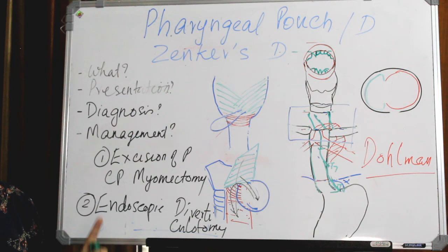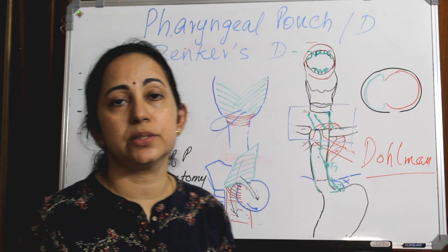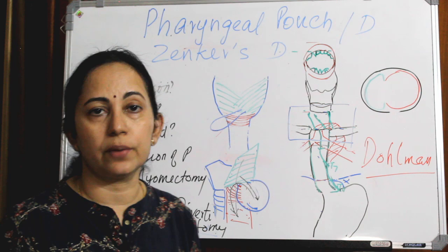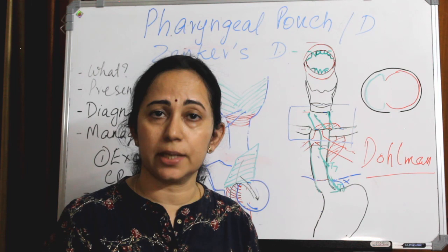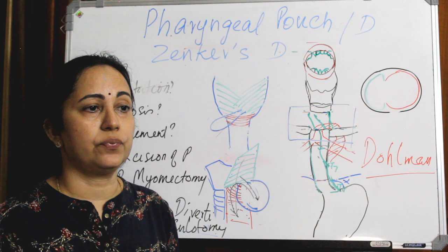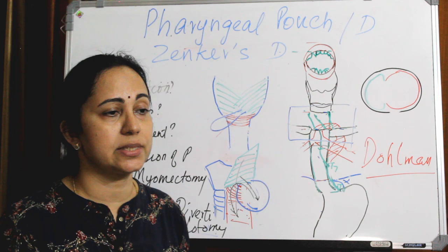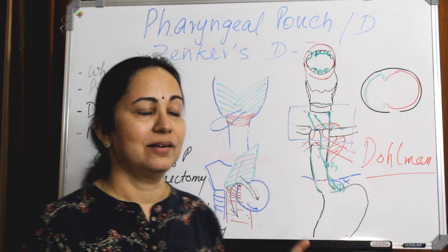Pharyngeal pouch has many MCQs asked from it. It is also called the gateway of tears and is a pulsion diverticulum because of increased intraluminal pressure. It mainly happens in elderly people above 60 years of age. Common complaints are dysphagia and regurgitation. Diagnosis is by barium swallow, and management involves two methods: excision of the pouch, and endoscopic diverticulotomy, which is the preferred method.